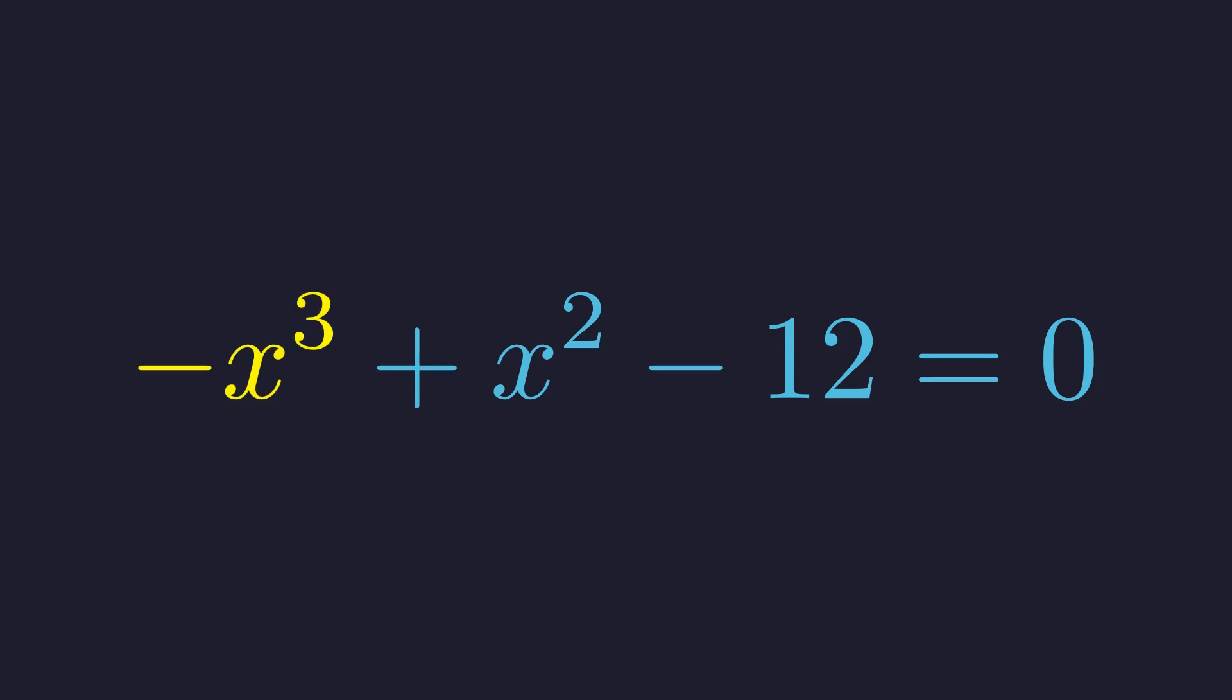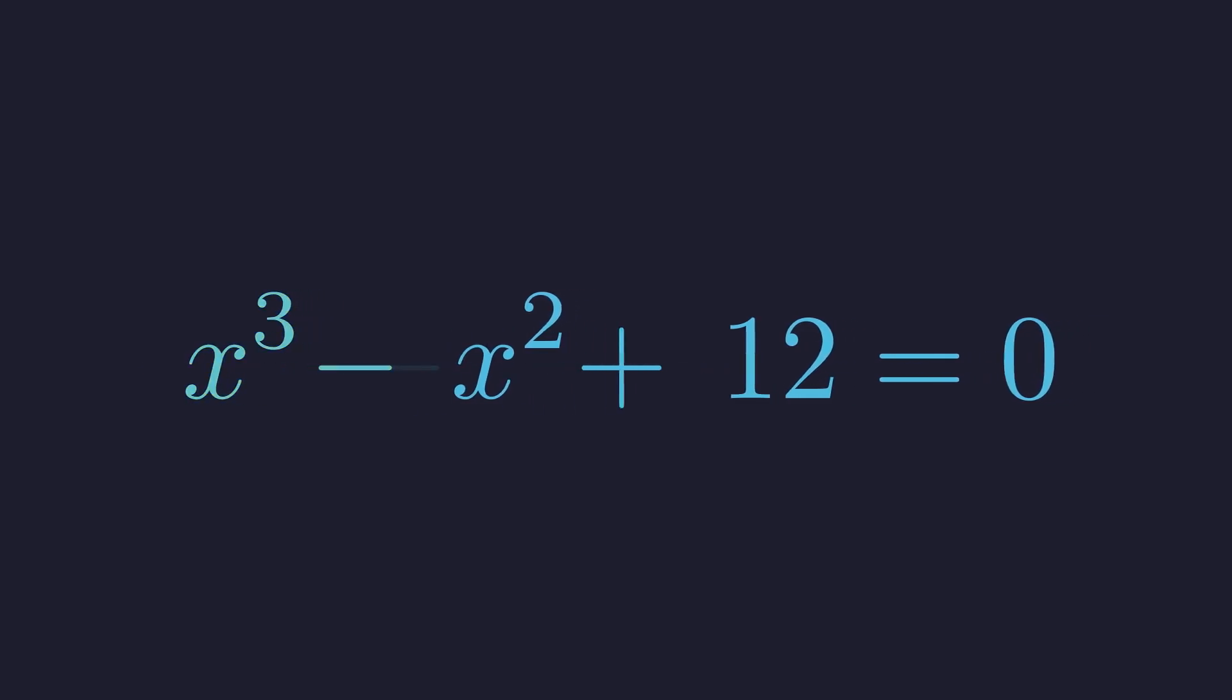It's conventional to have a positive leading coefficient, so we'll multiply everything by negative 1. Flipping every sign gives us standard form: x cubed minus x squared plus 12 equals 0. Now here's the key insight. We're going to decompose the constant term in a very deliberate way to reveal some hidden structure.